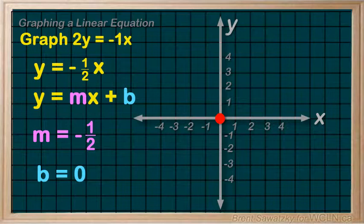Let's plot that at y equals zero, right here on the origin, and that's our y-intercept. Our slope in this case, that is the number being multiplied by x, is negative one half.